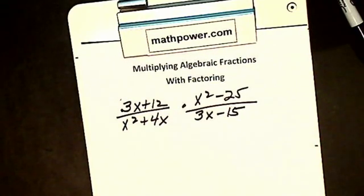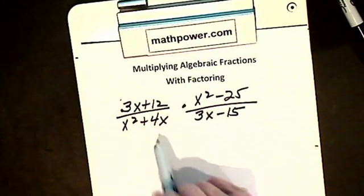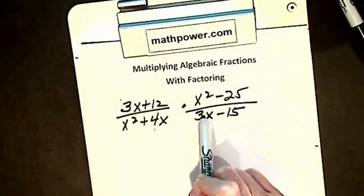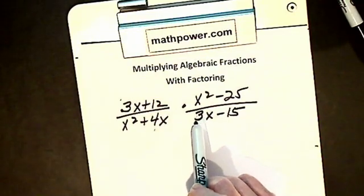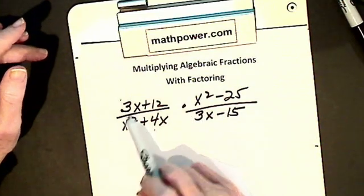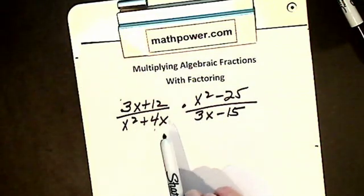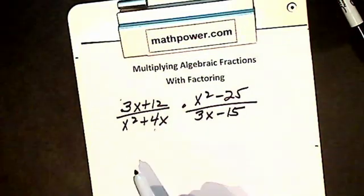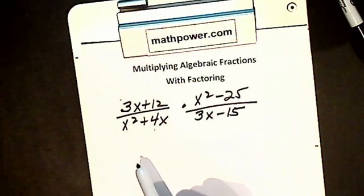This lesson is multiplying algebraic fractions with factoring. I'm still on multiplication. The only difference is I've got a couple terms up here and a couple terms here. I can't start canceling. I can't cancel the three x's because canceling is a form of division. I can't cancel when I have terms in division. I've got to change everything to factors. So in multiplication division, I have to factor and cancel.